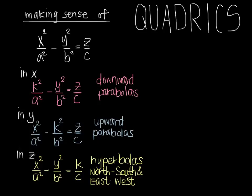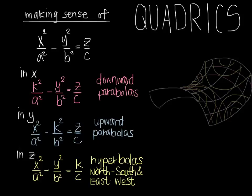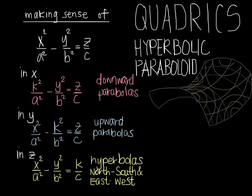What kind of quadric surface is this? Putting it all together, this is called a hyperbolic paraboloid. The traces that appear twice — the parabolas — take the noun part of the name, and the traces that appear once — the hyperbolas — take the adjective part. In the drawing, the downward-facing parabolas are the red traces, the upward-facing parabolas are the blue traces, and the north-south and east-west hyperbolas are the yellow traces.